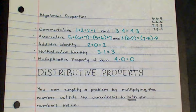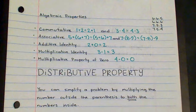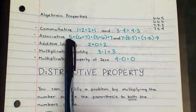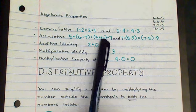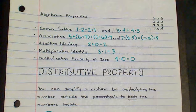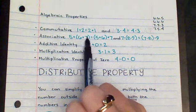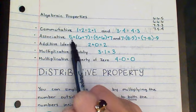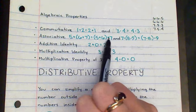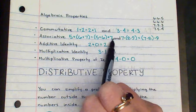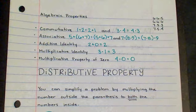That same rule applies to the associative property, which says that you can change the grouping of numbers as long as it's all addition or all multiplication. So with all addition, 5 plus (6 plus 7) is the same as (5 plus 6) plus 7. This property becomes most useful when one of the numbers is a variable: 5 plus 6 plus x — you can do 5 plus 6 first and get 11 plus x. That's why this property is useful.